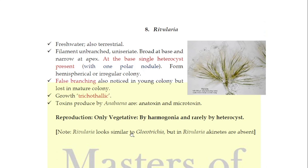Now we come to member number eight, Rivularia, which is the last member I will cover in this video. After this, one more remains — Cytonema — along with all the MCQs on Cyanophyta members, which I will cover in the next video. Rivularia is a freshwater alga. Its filament is also unbranched and uniseriate. The filament is broad at the base and narrows toward the apex. At the base, a single heterocyst is found with one polar nodule. The colonies it forms are hemispherical or irregular.